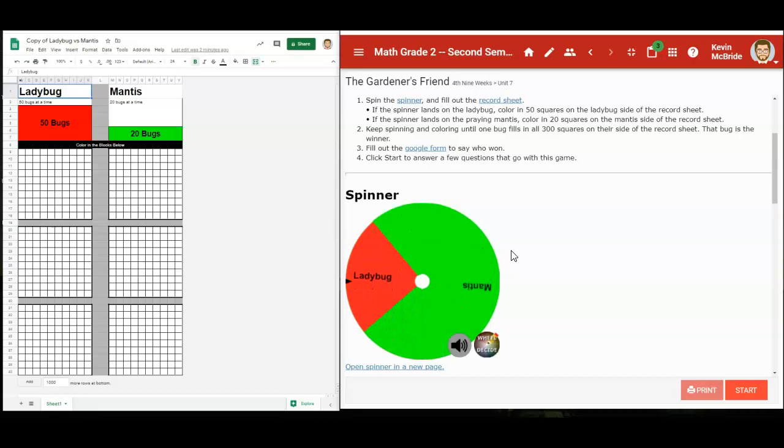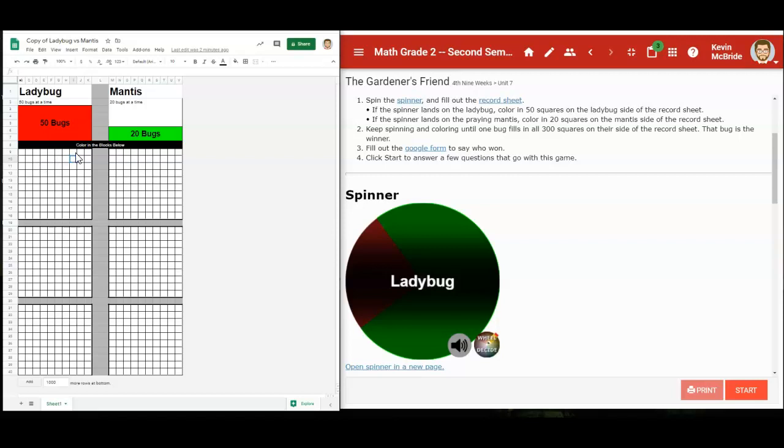I'm going to spin the spinner and this first one lands on the ladybug. Because it lands on the ladybug, I get to color in 50 squares for the ladybug. It's 10 across and 10 down, so that's 100 right here, and the first bug to reach 300 wins. I select all of those squares, hit the paint bucket up here, and color them in red.